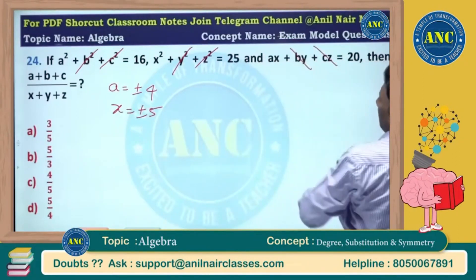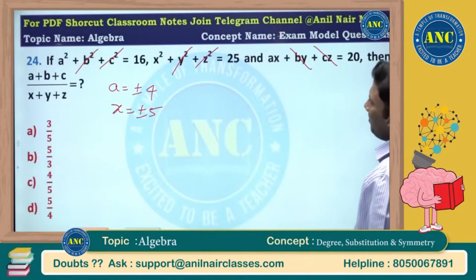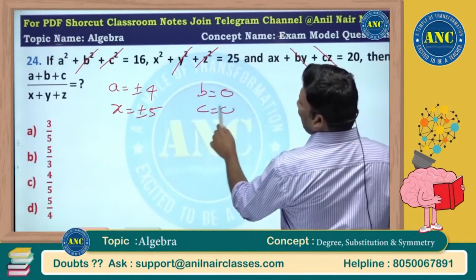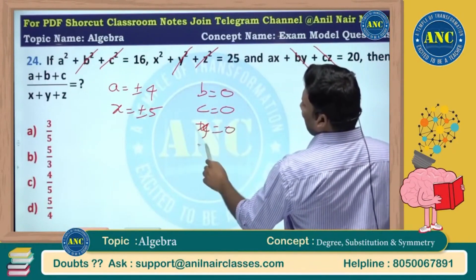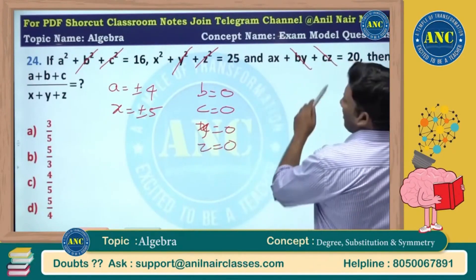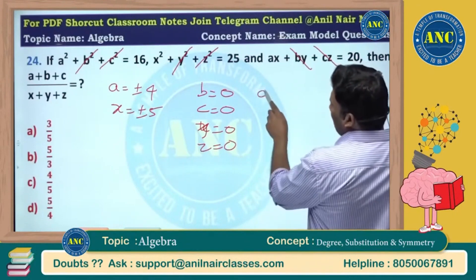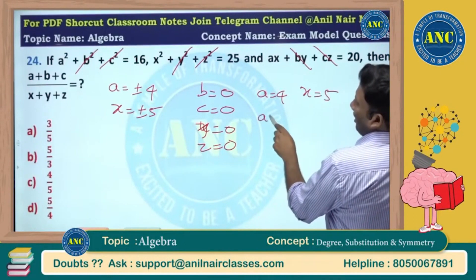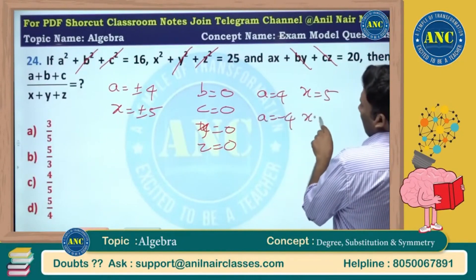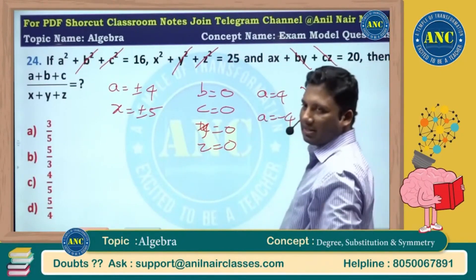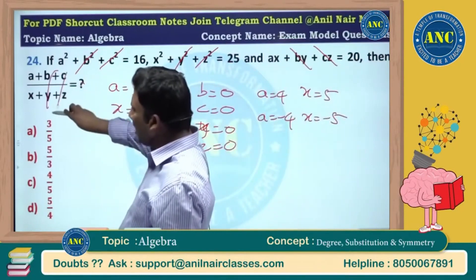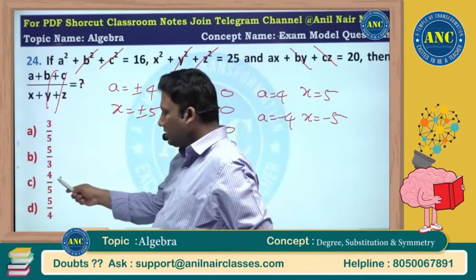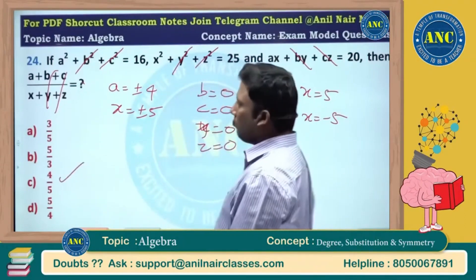What I did? I set b = 0, c = 0, y = 0, and z = 0, so a times x equals 20. That means a can take 4, x can take 5; or a can take minus 4, x can take minus 5. Two cases are possible, but b, c, y, z are all out. So a by x equals 4 by 5. Answer for this question is 4 by 5.